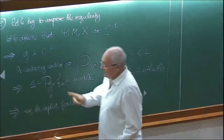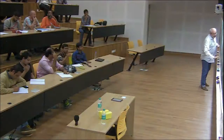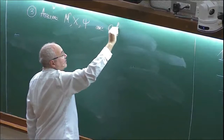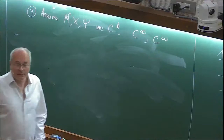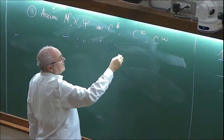Let's try to improve the regularity again. Assume now that psi(m, x) is Ck, or C-infinity, or analytic. Then the conclusion is that g is Ck, C-infinity, or analytic respectively. How do you prove that? This is much easier, because you apply the chain rule to the equation psi(m, g(m)) equals g(m).